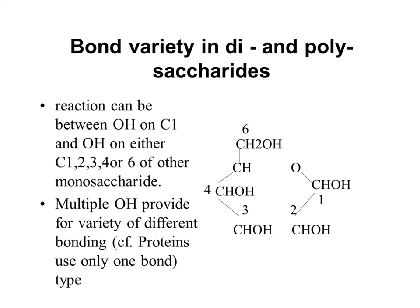When sugars react together, there can be a whole variety of chemical bonds. As you can see from this picture, there are five hydroxyl groups in the hexose molecule, and the hydroxyl group on carbon number one can interact with carbon numbers one, two, three, four, and six of another monosaccharide to form an O-glycosidic bond. This means two identical sugars can form a whole range of dimers. This structural diversity — absent in proteins, which use only one bond type to form a polymer — is a key feature of carbohydrates.